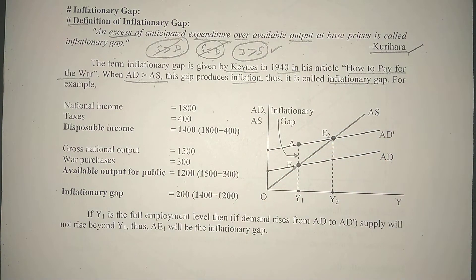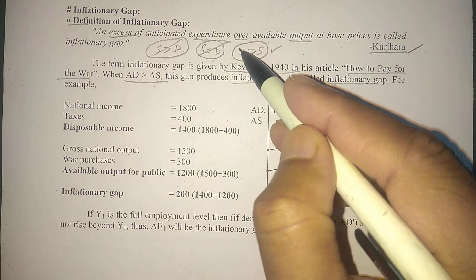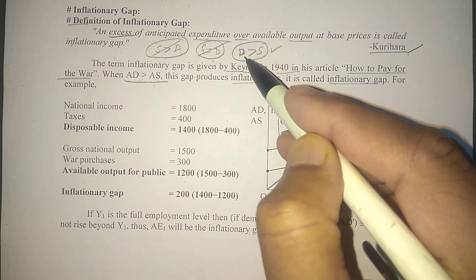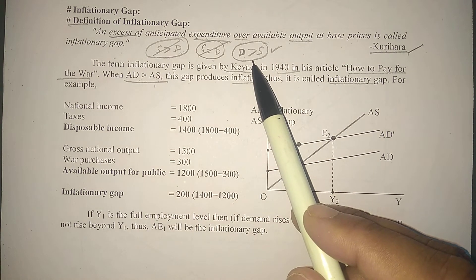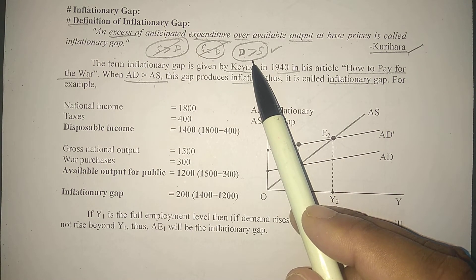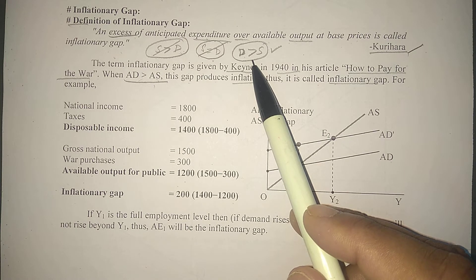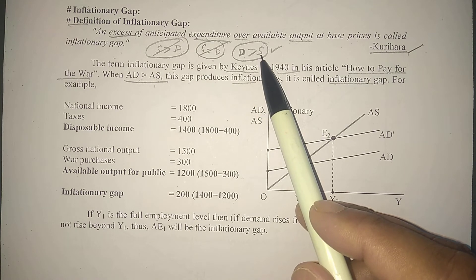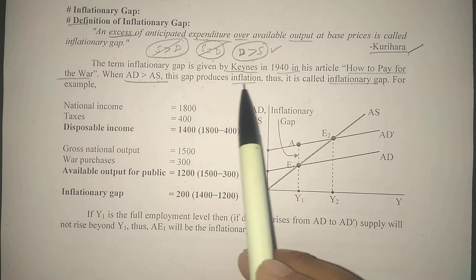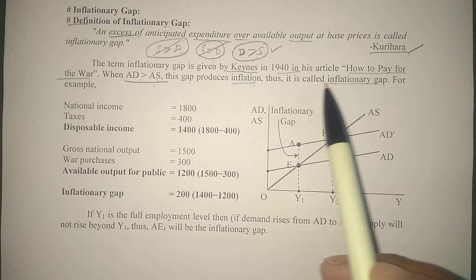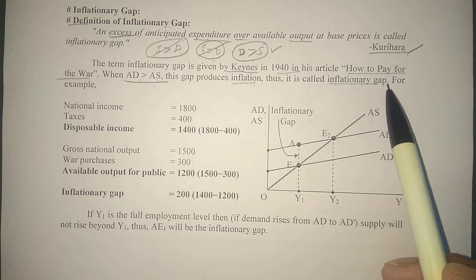क्योंकि जब demand ज्यादा होगी, supply कम होगी, तो यह जो demand ज्यादा है — जितनी demand ज्यादा है supply से — उतना inflation होने का chance है, prices बढ़ने का chance है। इसलिए हम इसको कहते हैं inflationary gap, क्योंकि यह जो gap है, यह inflation कर सकता है। तब ही हम इसको कहते हैं inflationary। This gap produces inflation, therefore it is called inflationary gap.